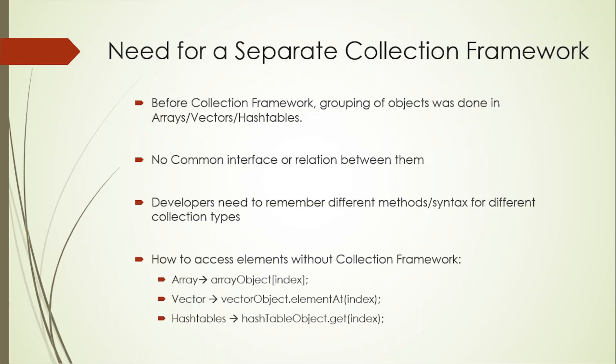Now, let's see what is the need of a separate Collection Framework. Before the Collection Framework was introduced, the standard methods for grouping Java objects were arrays, vectors, or hash tables. All these had no common interface. Therefore, though the main aim for all the collections is the same, the implementations were defined independently and had no correlation among themselves. It was also very difficult for programmers to remember all the different methods and their syntaxes in every different collection class.